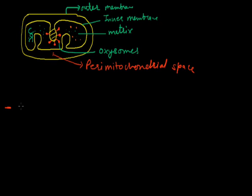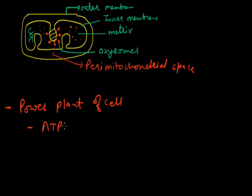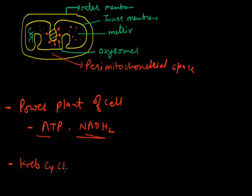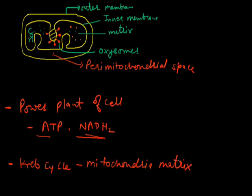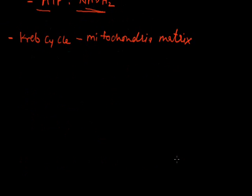So what is the role of mitochondria in the cell? It is responsible for the production of energy in the cell, so we call it the power plant of the cell. It produces energy in the form of ATP, NADPH, and FADH2. These energy molecules are used in various metabolic activities, so they are also called the storage batteries of the cell. The Krebs cycle also occurs and takes place inside the mitochondria matrix.